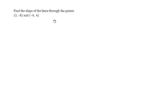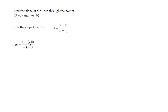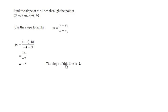Find the slope of the line through the points (3, negative 8) and (negative 4, 6). Again, we use the slope formula. We put in y₂ minus y₁: 6 minus negative 8 over x₂ minus x₁: negative 4 subtract 3. 6 minus negative 8 means 6 plus 8, or 14; negative 4 minus 3 is negative 7. Simplifying by division, we get negative 2. The slope of this line is negative 2.